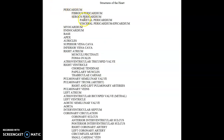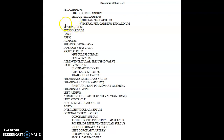We've discussed the pericardium and the different parts of it, and talked about base and apex. Let's talk about the myocardium and endocardium. The myocardium is the muscle of the heart — it is the majority of the heart, made up of cardiac muscle cells. Myo means muscle, cardia means heart, so it's the muscle of the heart.